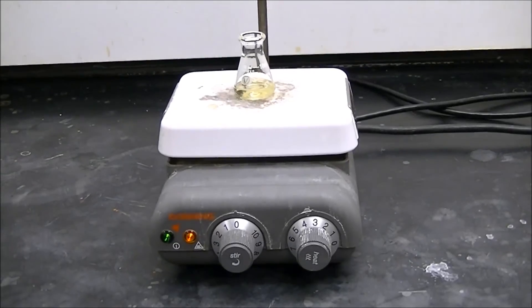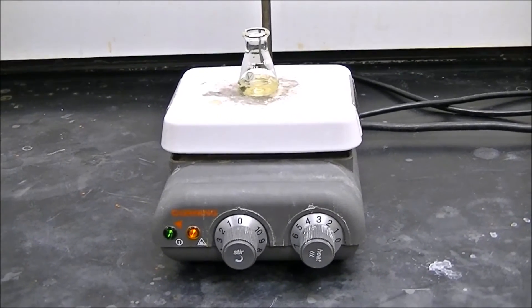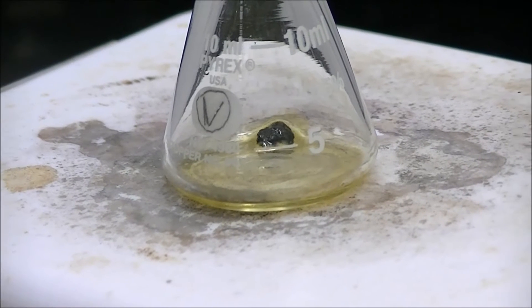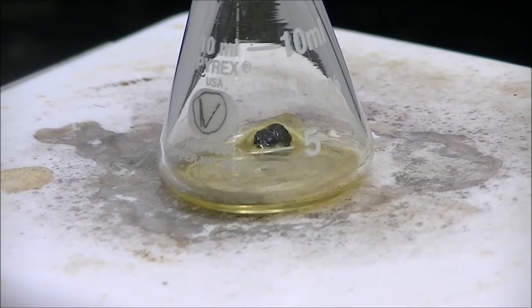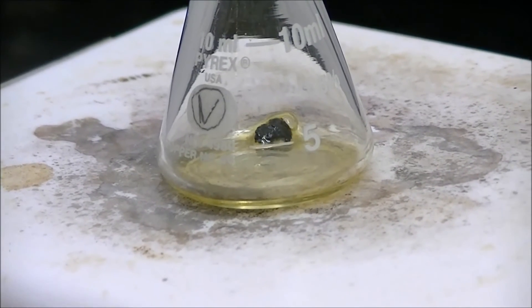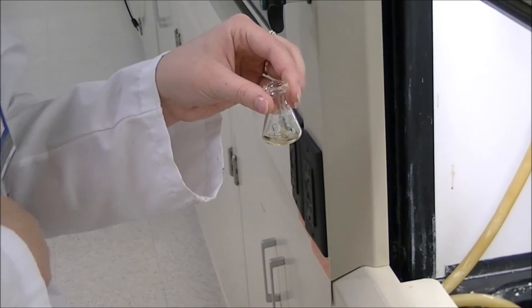Now boil off the diethyl ether. Note that the heat does not have to be very high. The lab says you'll have a yellow liquid left over after boiling. The boiling doesn't take very long. You know you're done when there are very few bubbles showing up on the boiling stone and the bottom of the flask is pretty warm to the touch.